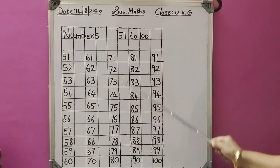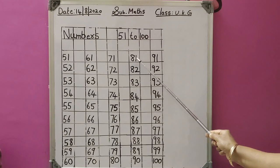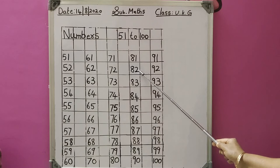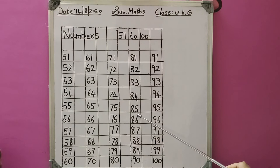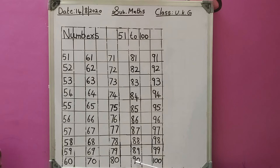Then again leave one column. In the next column write: 81, 82, 83, 84, 85, 86, 87, 88, 89, 90. After 89: 90.